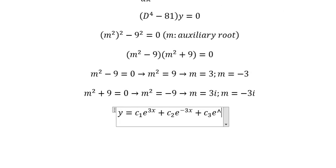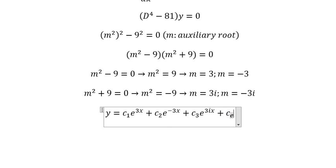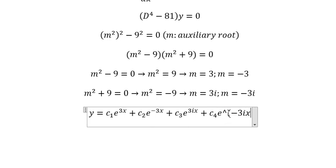plus c3 times e to the power of 3ix and the last one c4 times e to the power of negative 3ix.